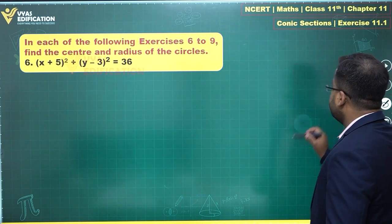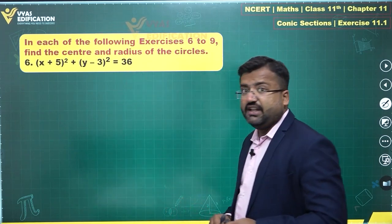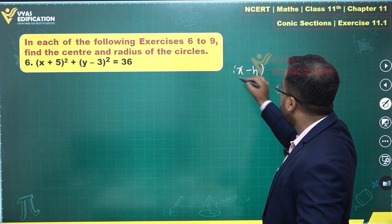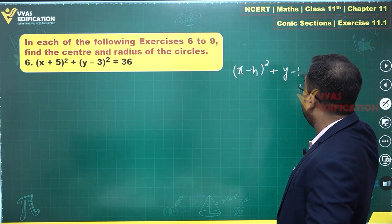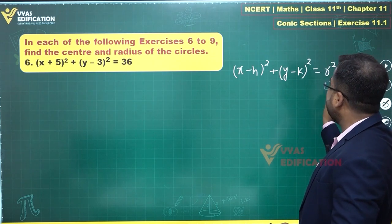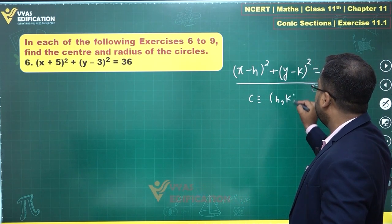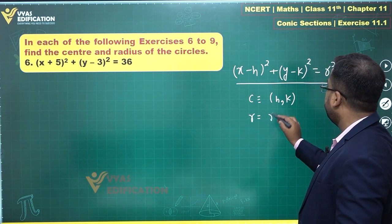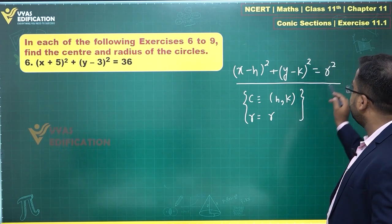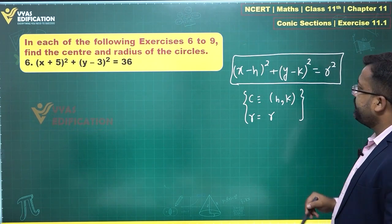Let's go about finding the center and radius. If you're given an equation in the standard form — standard form means that if you're given an equation in this particular form — you can easily identify the center. The center will be h, k, and the radius will be r. This is what you can identify. Center and radius can be identified with the help of this particular form directly.